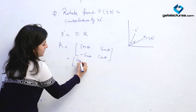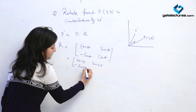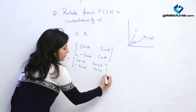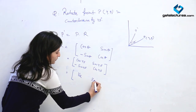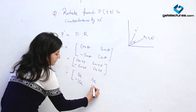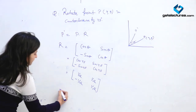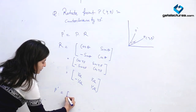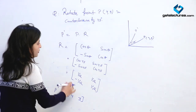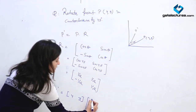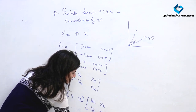Substituting theta equals 45 degrees, we get R equals [cos 45, sin 45; minus sin 45, cos 45]. Since cos 45 and sin 45 both equal 1 over root 2, the matrix R becomes [1/√2, 1/√2; −1/√2, 1/√2]. Now we apply P dash equals P dot R, where P is [4, 3].